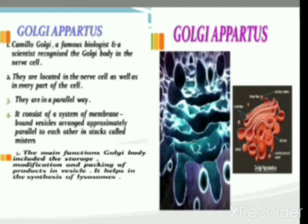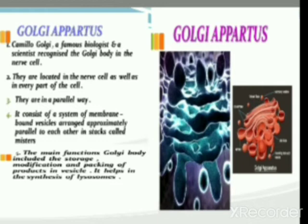In animal cells it is called Golgi apparatus, whereas in plant cells it is called dictyosomes. One important function of Golgi apparatus is that it acts as an assembly area for the storage, processing, and packaging of various cellular secretions. Substances like proteins, lipids, and fats manufactured in the endoplasmic reticulum need to reach different parts of the cell. They are packed in vesicles and distributed, so packaging and transporting is taken care of by the Golgi apparatus.